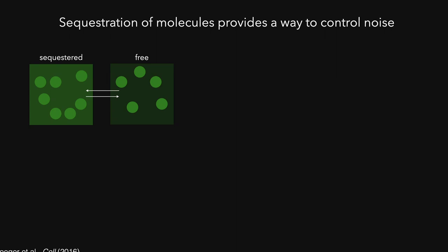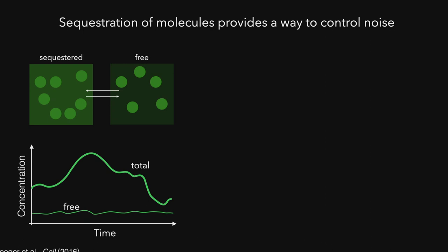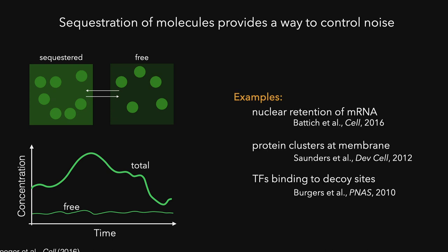Another way by which cells can control fluctuations is sequestration. The idea is that you put a certain fraction of the molecules into a sequestered state — if you have too much you put them in, and if you have too little you take them out again — thereby stabilizing the soluble fraction within narrow ranges. There are a couple of manifestations of such sequestration-based noise suppression: nuclear retention where delayed export of transcripts reduces copy number fluctuations in the cytoplasm; protein clusters at the membrane of fission yeast to stabilize protein concentration gradients; and decoys, which are non-functional DNA binding sites that can sequester transcription factors to reduce fluctuations.